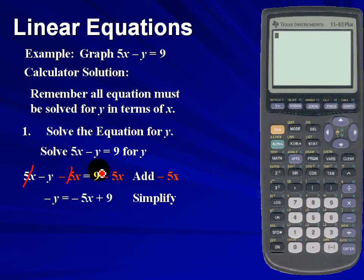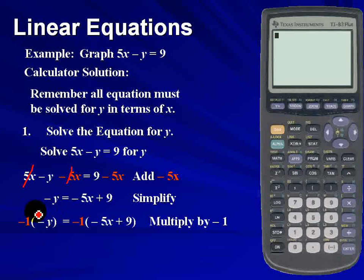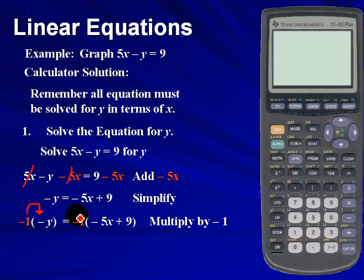Next, we'll simplify, and our new equation is negative y equals negative 5x plus 9. Remember that we want to solve for a positive variable, so here we'll simply multiply both sides by negative 1. And in doing so, we will distribute negative 1 on both the left and the right-hand sides.